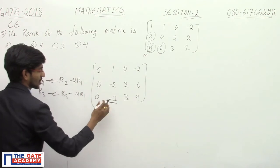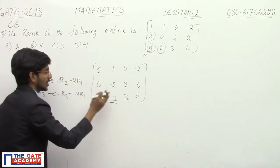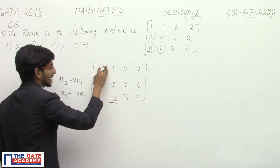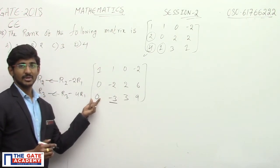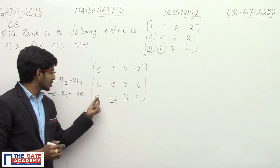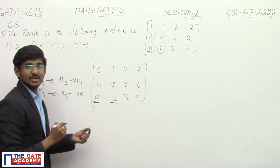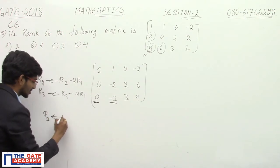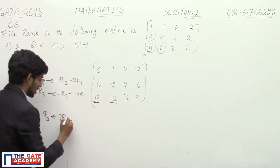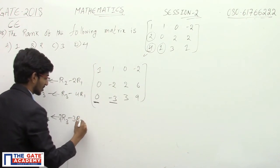Now to make this element zero, only use R2. Why? Because if you use R1, then again this element becomes non-zero. So don't disturb this element; that's why use R2 only. R3 → 2R3 - 3R2.